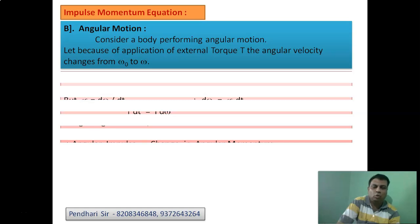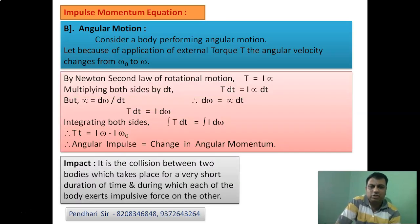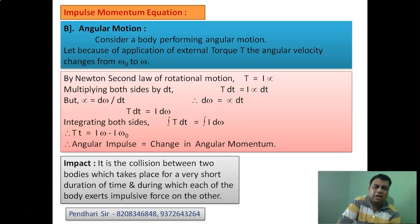Multiplying both sides by dt (a very small time interval), we get T·dt = I·α·dt. Since angular acceleration α = dω/dt, we replace α·dt with dω. Integrating both sides gives T·t = I·ω − I·ω₀, where I·ω is the final angular momentum and I·ω₀ is the initial angular momentum. Therefore, angular impulse equals change in angular momentum.